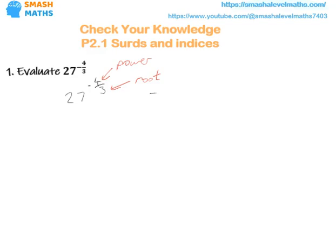First of all I'm going to deal with the negative power, which is the reciprocal. Hopefully we should know that a negative power means we just take the reciprocal: 1 over 27 to the power 4 over 3. You'll notice that the negative has disappeared from the power now.